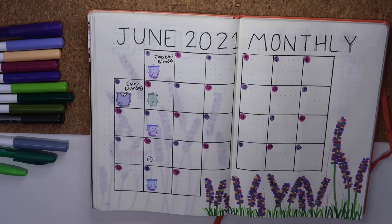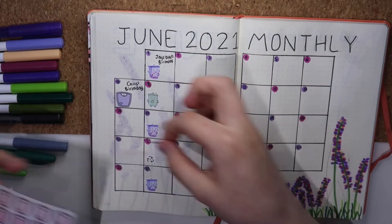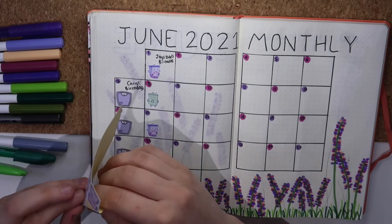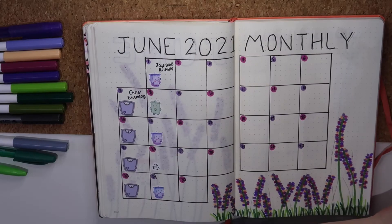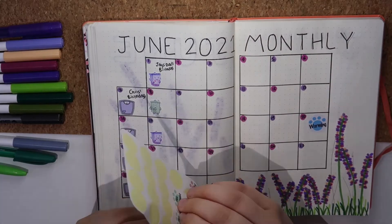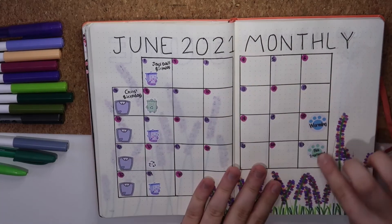Then lastly, I add in stickers for any cat things, which this month was worming and flea treatments. I made these stickers for myself and there are still some available on my Etsy.